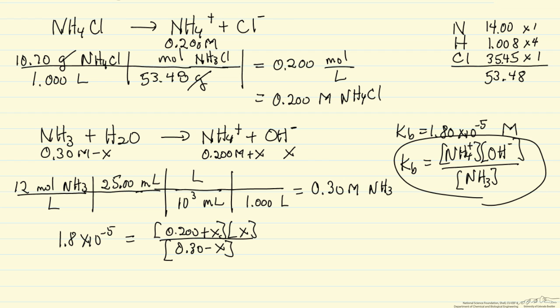And if we make that assumption, we have 0.2 times x over 0.3, we can solve this for x, and x is indeed small relative to 0.2, so our assumption was good.